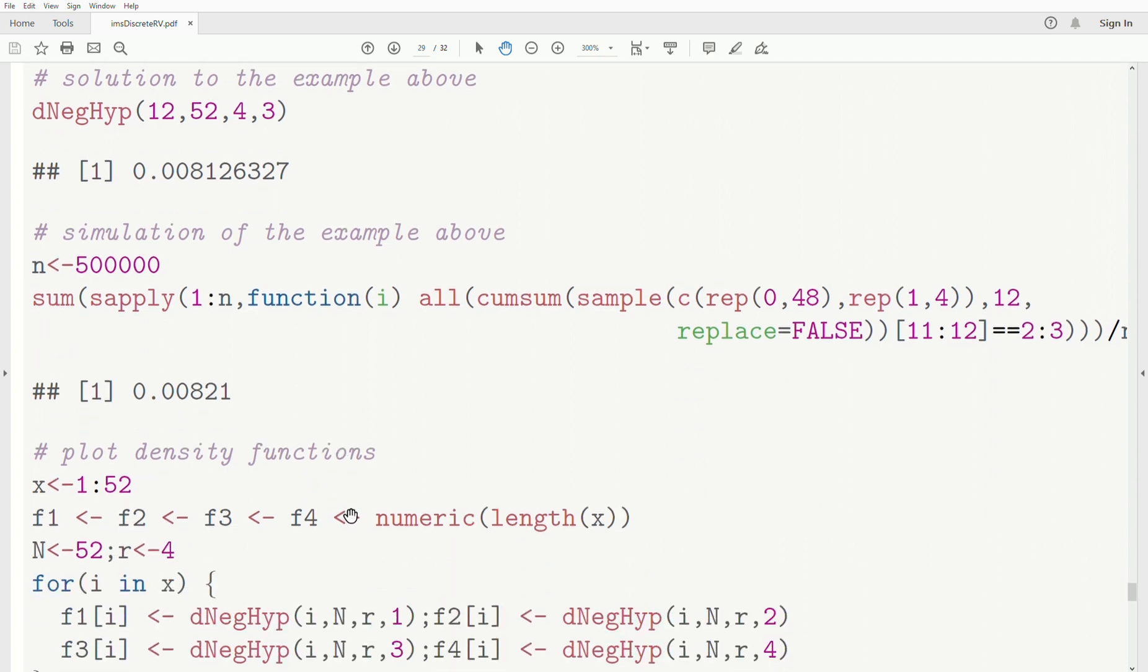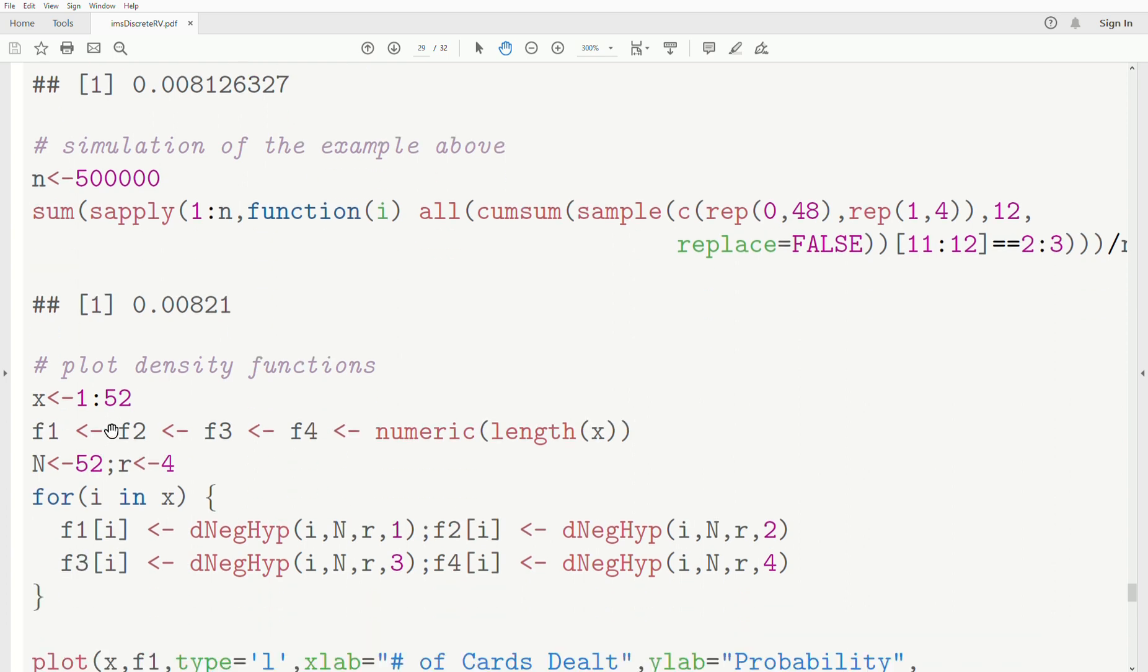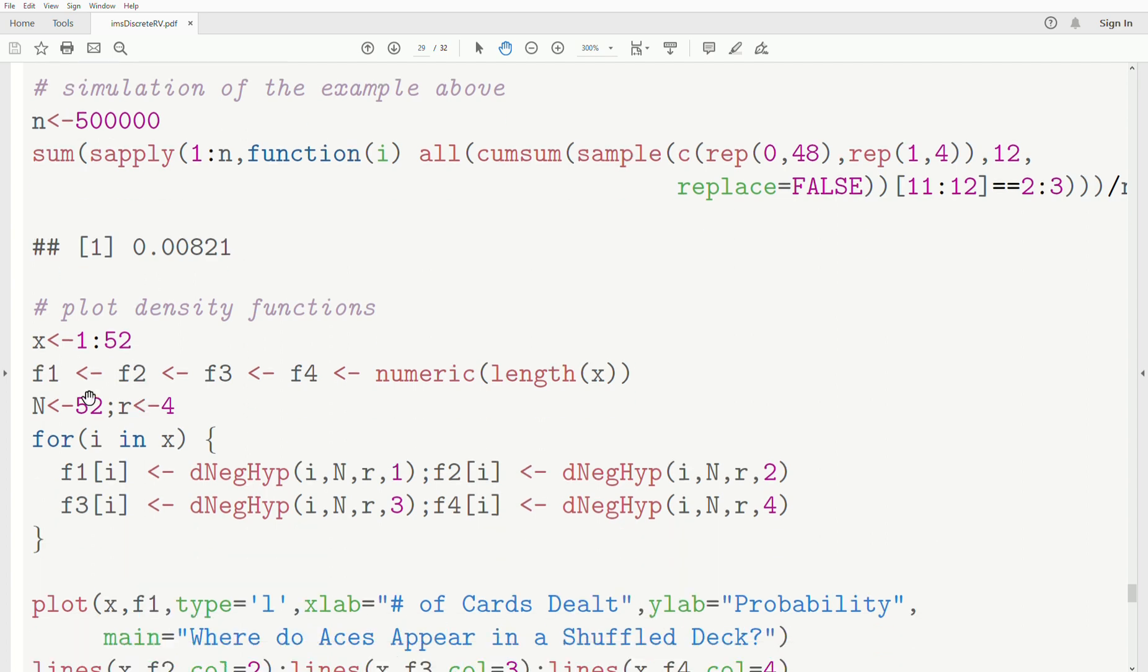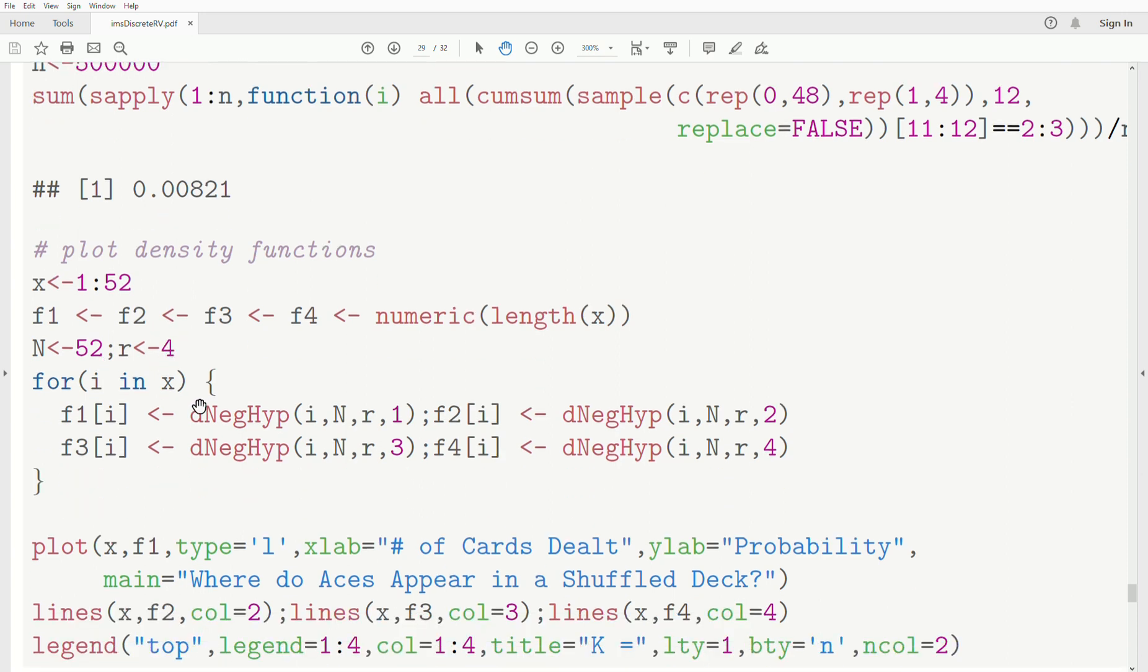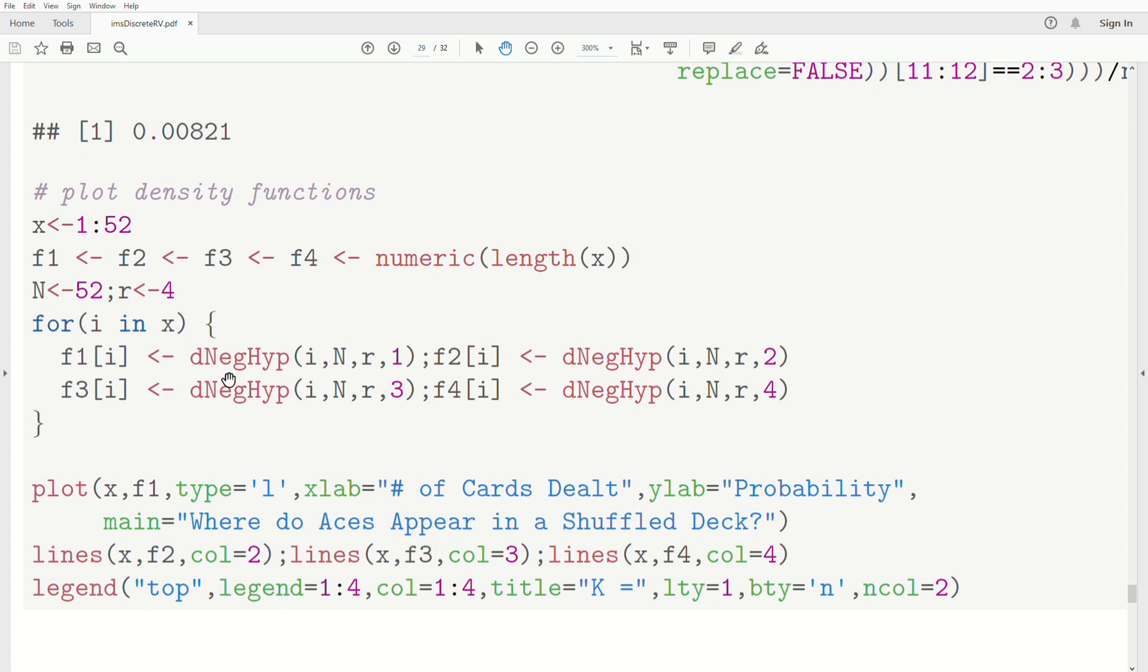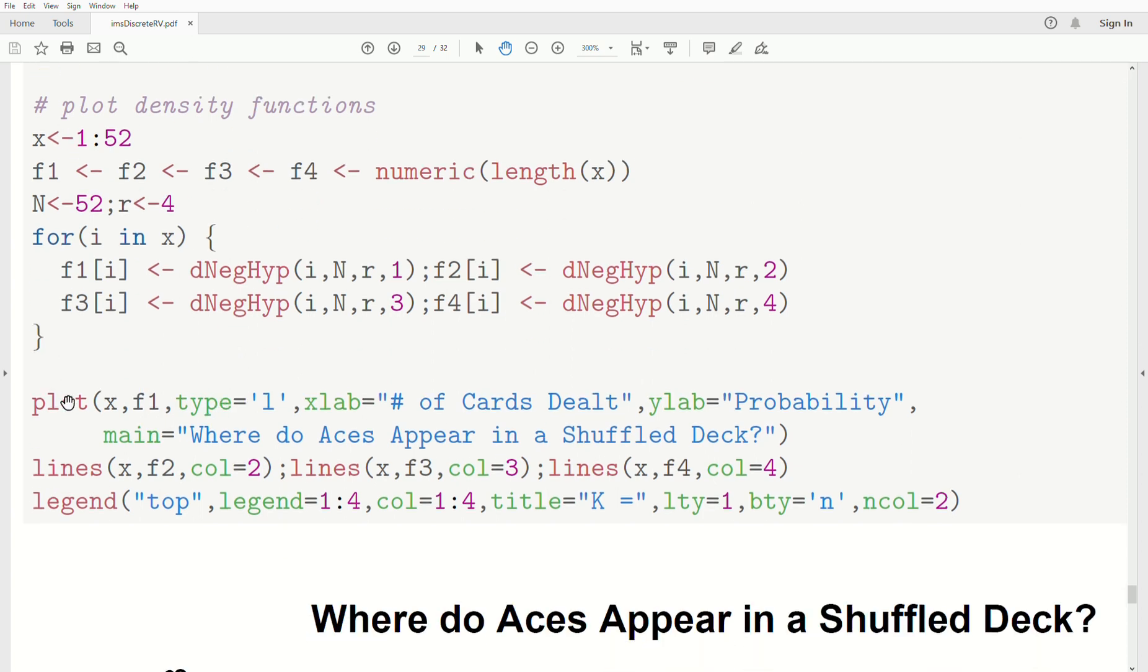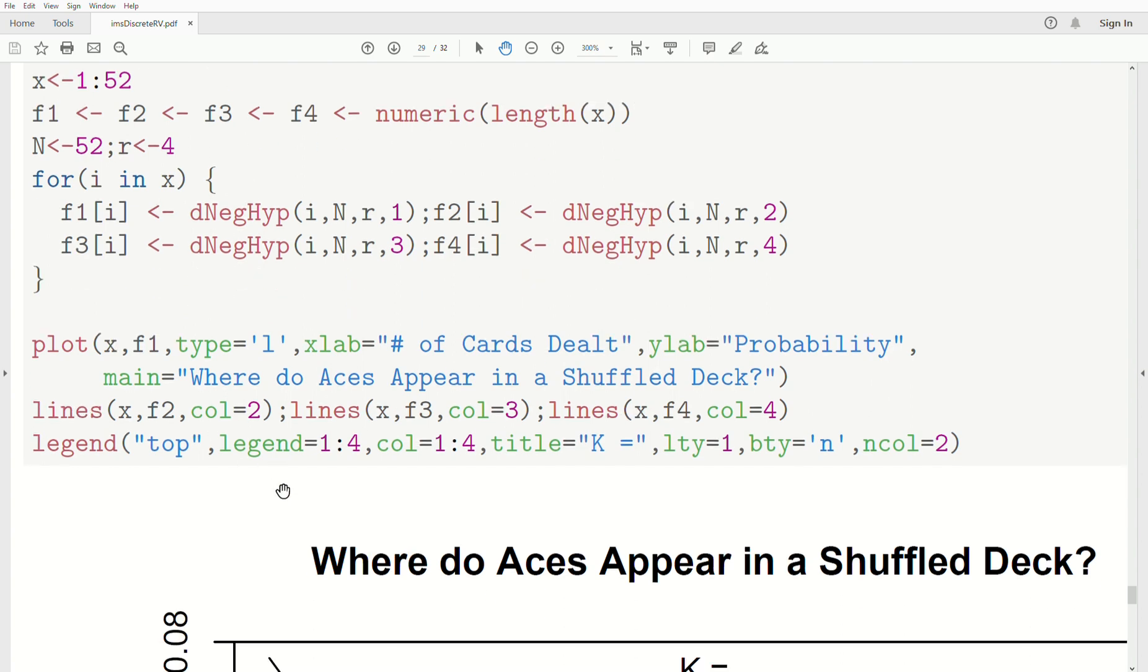Now I want to plot the probability density functions of this example. We're going to let X be 1 to 52. F1, 2, 3, and 4 are the density functions for when K is 1, K is 2, K is 3, K is 4. We just looked at K equals 3 when X is 12. We're going to let N equal 52 (52 cards), R is 4 (there's 4 aces). This cycles through the density of the negative hypergeometric distribution for the different values of K. I'm going a little fast—as always, I'll copy and paste this R code into the comments of the video. We're going to plot them and then add more lines and create a legend.